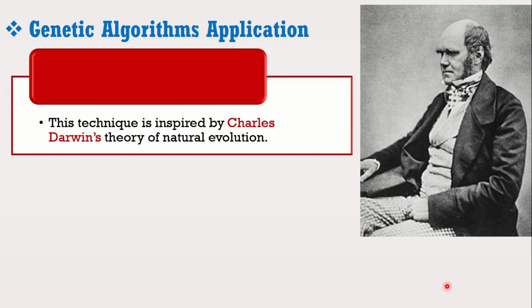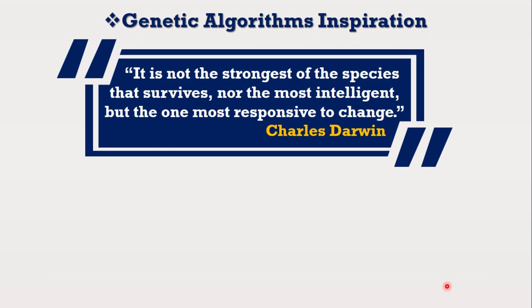Let's start to understand the genetic algorithm with the famous quote by Charles Darwin. According to him, it is not the strongest of the species that survives, nor the most intelligent, but the one most responsive to change. The entire concept of a genetic algorithm is based on this quotation.